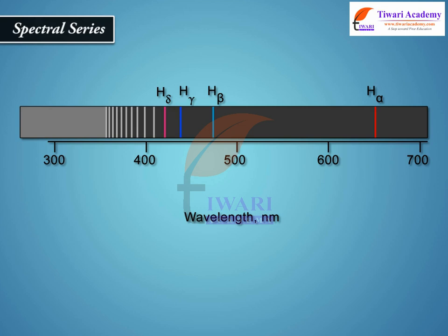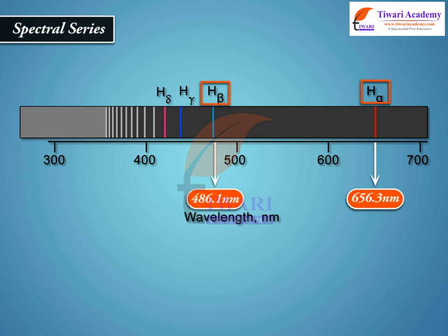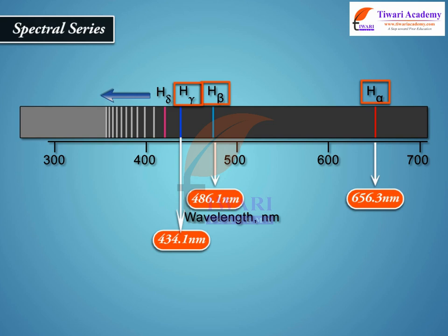The spectral line with the longest wavelength, 656.3 nanometers, in the red region is called H-alpha. The next line having wavelength 486.1 nanometers in the blue-green region is called H-beta. The third line having wavelength 434.1 nanometers in the violet region is called H-gamma, and so on. As the wavelength decreases, the lines appear closer and closer together and become weaker in intensity.